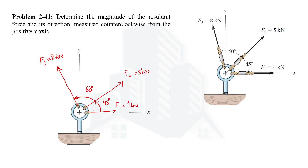We have to determine the resultant. There are various ways to do this, but we are going to use the method in which we first resolve all the forces into their horizontal and vertical components. The benefit of doing this is that we will obtain the horizontal and vertical components of the resultant force, from which we can then determine its magnitude and direction. Let's determine the x-component of the resultant force, which equals the sum of all the x-direction components of the forces.